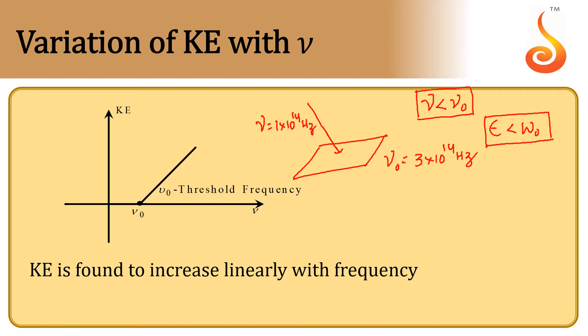But now, let me increase the frequency from 1×10¹⁴ Hz to 2×10¹⁴ Hz. What happens? Even now, I cannot observe the photoelectric effect, because even now the frequency of light is lesser than the threshold frequency of the metal.